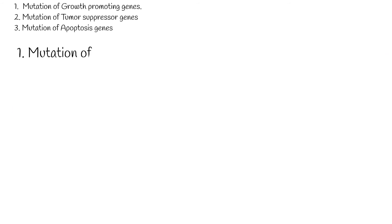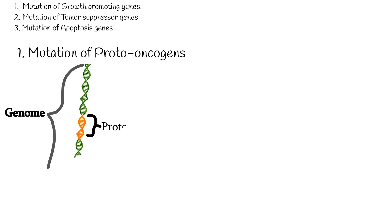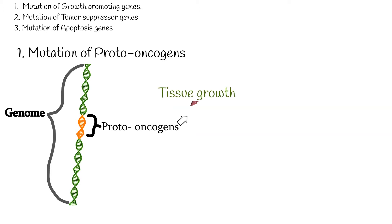Three common areas exist in which mutation causes cancers. One: mutation of growth-promoting genes, which are called proto-oncogenes. These proto-oncogenes we have normally; they are required for normal tissue growth.